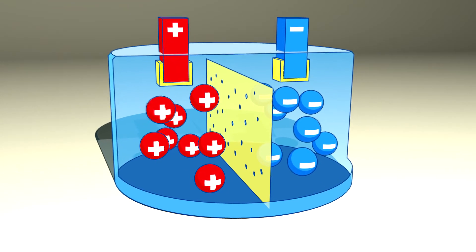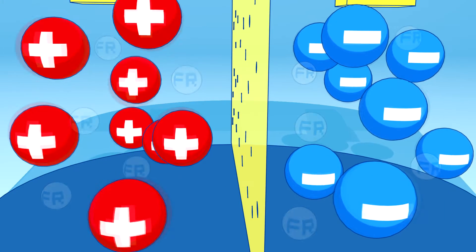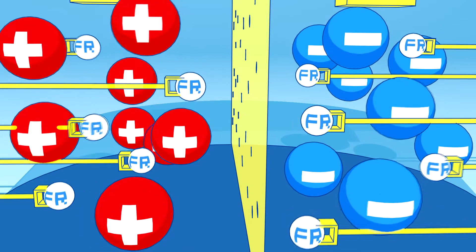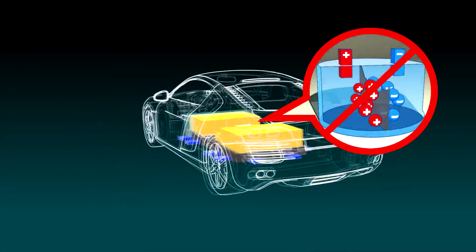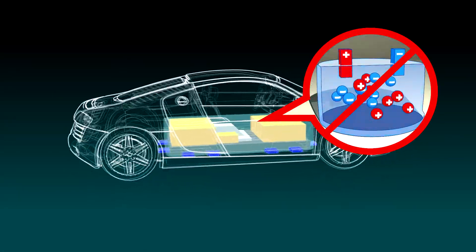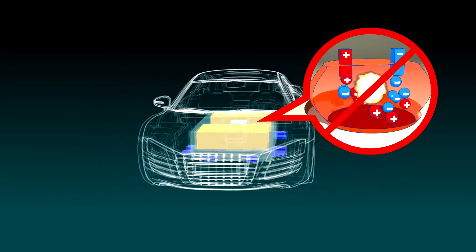At the same time, STOBA efficiently scavenges free radicals and suppresses oxygen release to shut down the thermal runaway process. The combination of these two effects virtually eliminates the risk of explosion in electric vehicles.